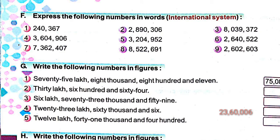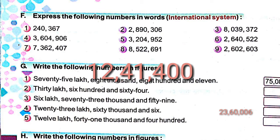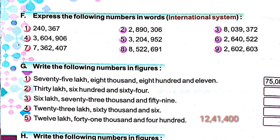Next: 23 lakh 60 thousand and 6 — in lakhs period 23, in thousands period 60, in ones period 6 means 006 — so the number is 23,60,006. Number five is 12 lakh 41 thousand 4 hundred — in lakhs period 12, in thousands period 41, in ones period 400 — so the number is 12,41,400.